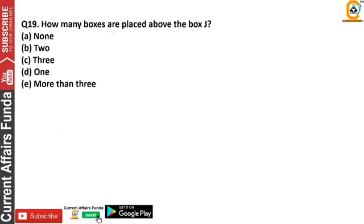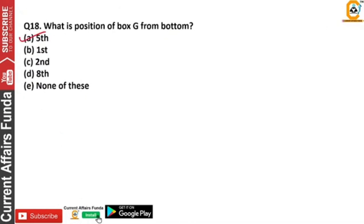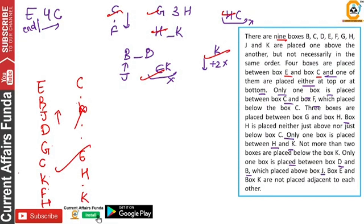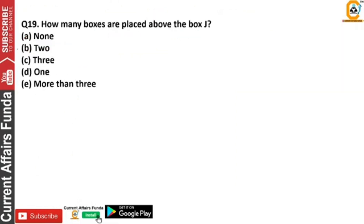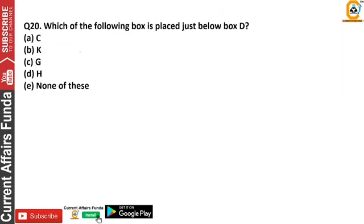Next we are asking: how many boxes are on J? Count — 2 boxes are on J. That is 2 options — we will click here.